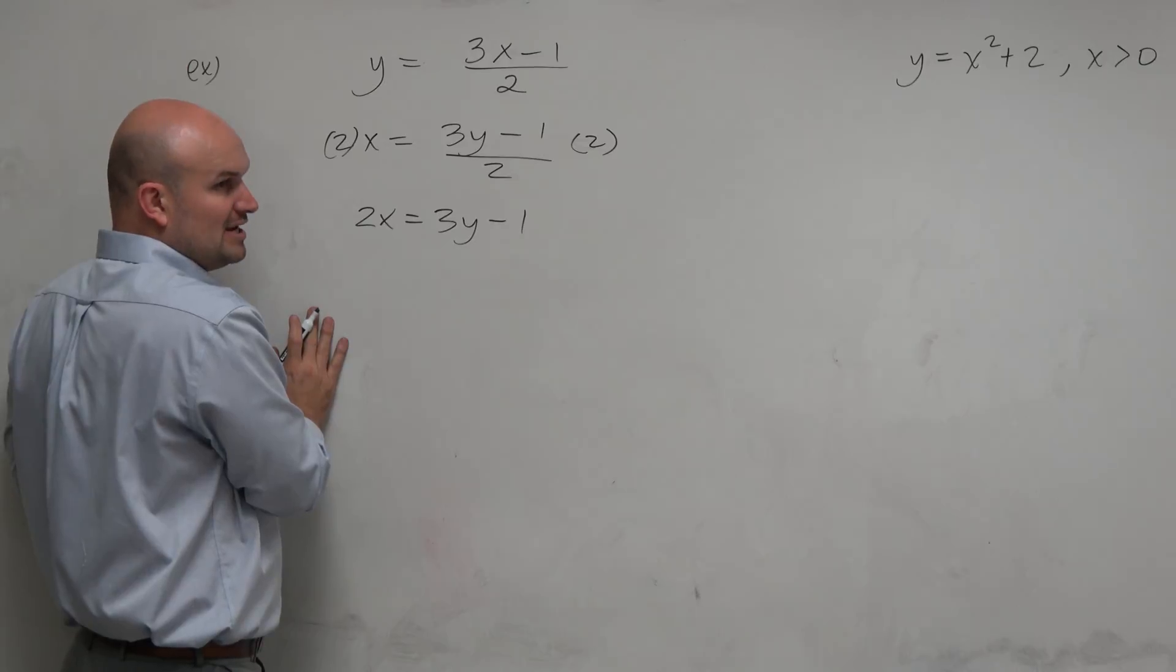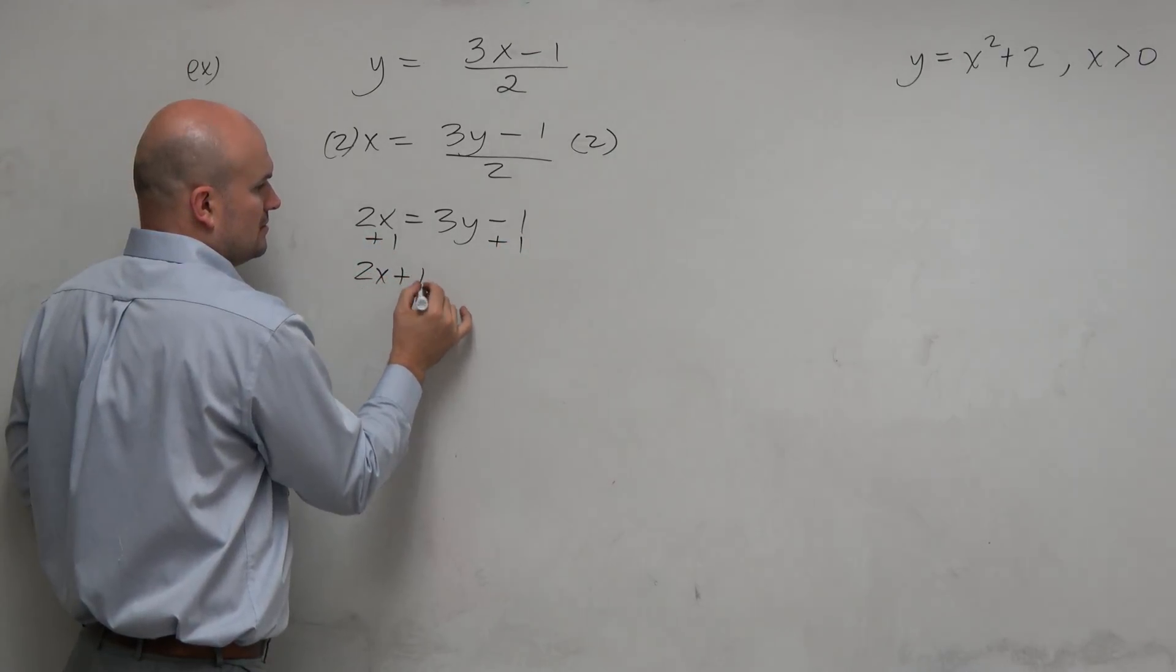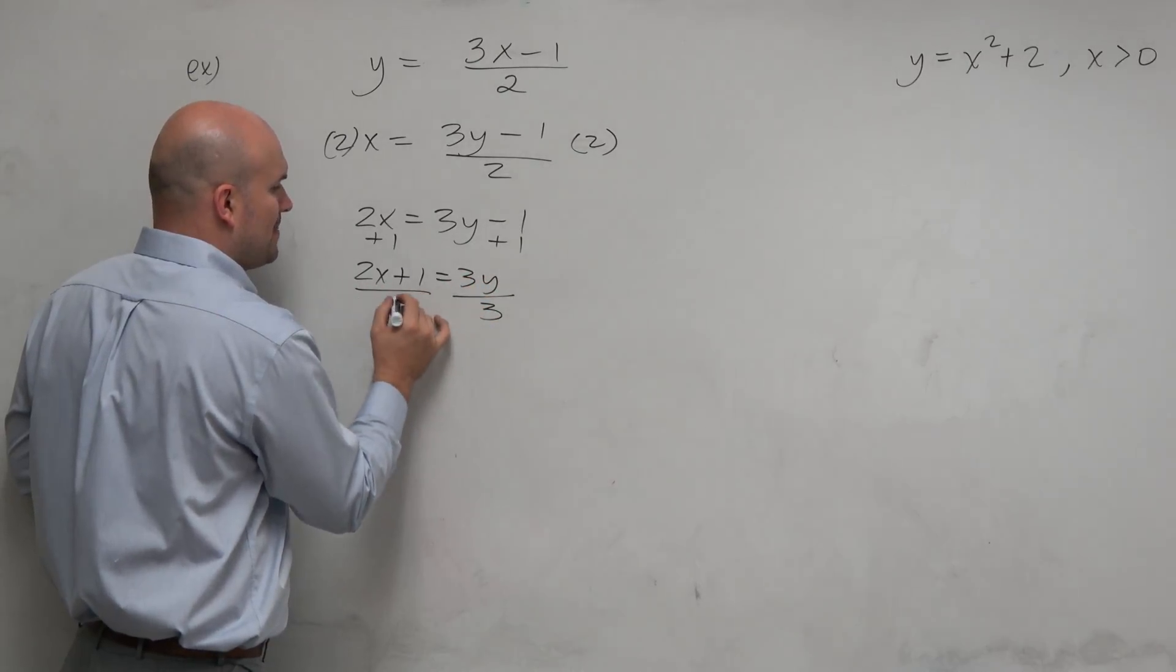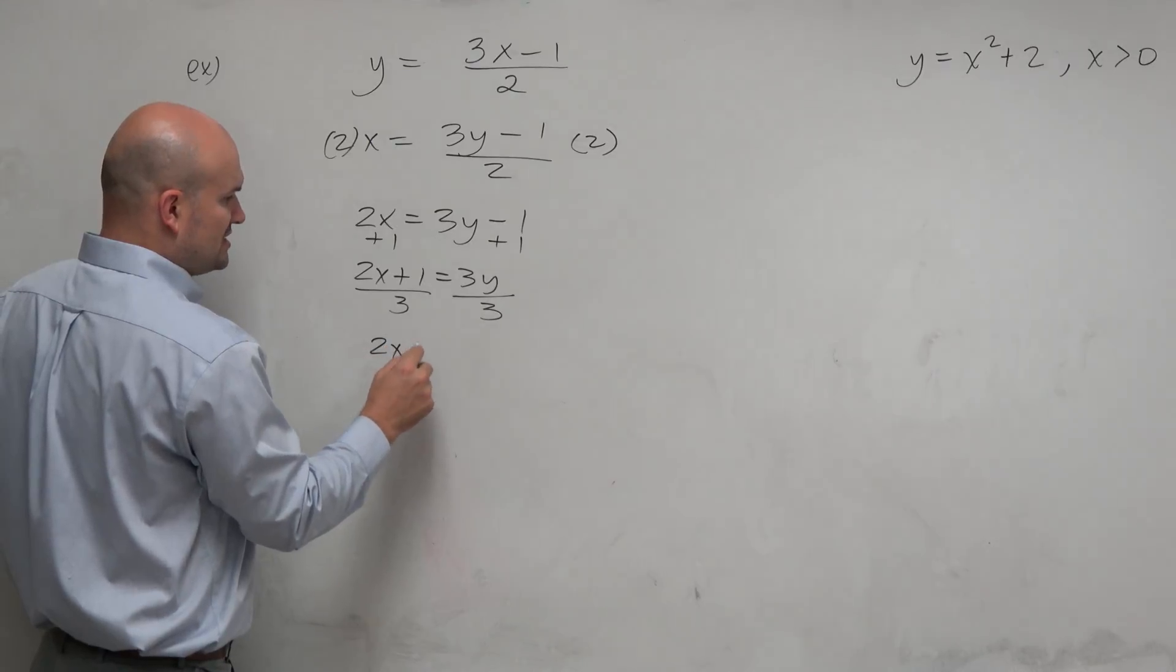Now it's just a two-step equation. So you add 1 to both sides and then divide by 3. Now, this could be a multiple choice question. So you could see the answer like this.